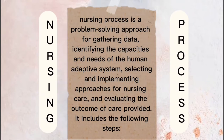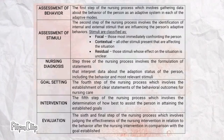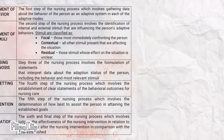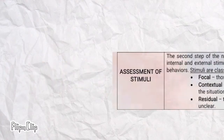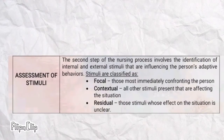The nursing process is a problem-solving approach for gathering data, identifying the capacities and needs of the human adaptive system, selecting and implementing approaches for nursing care, and evaluating the outcome of care provided. It includes the following steps. First, assessment of behavior — assess the behaviors manifested from the four adaptive modes.